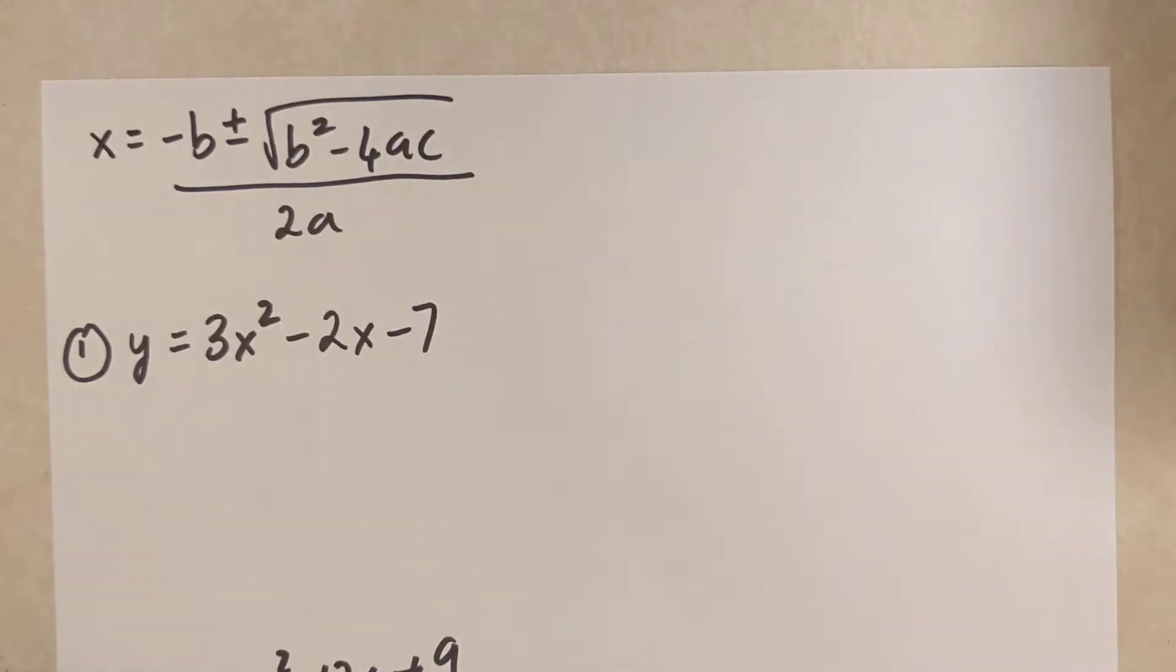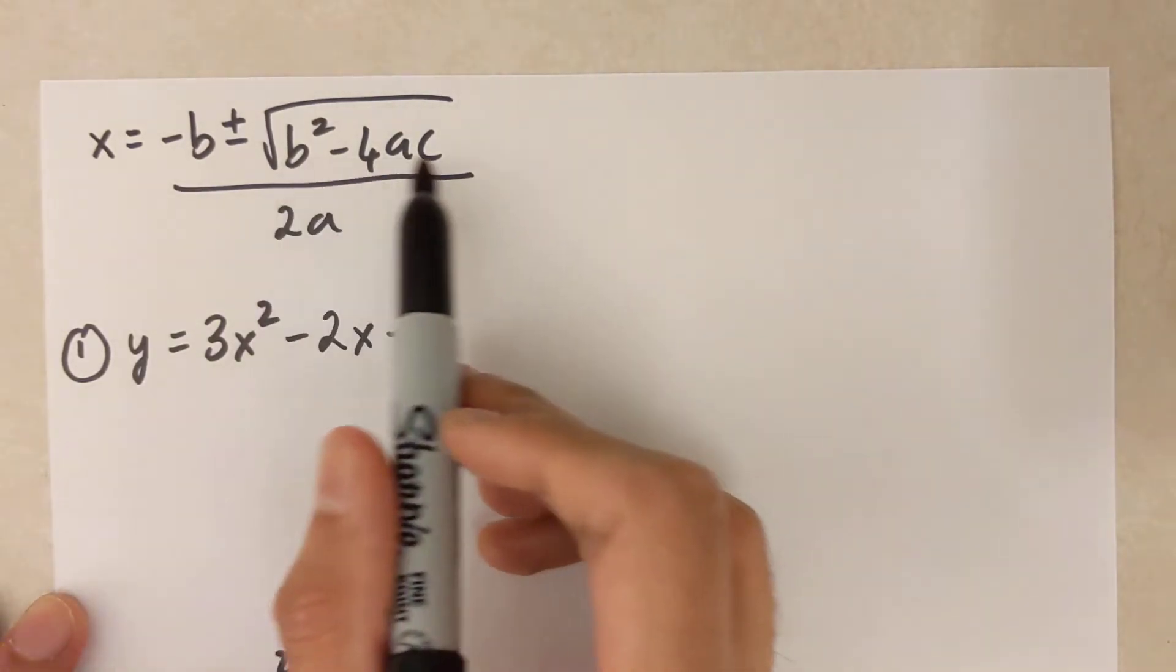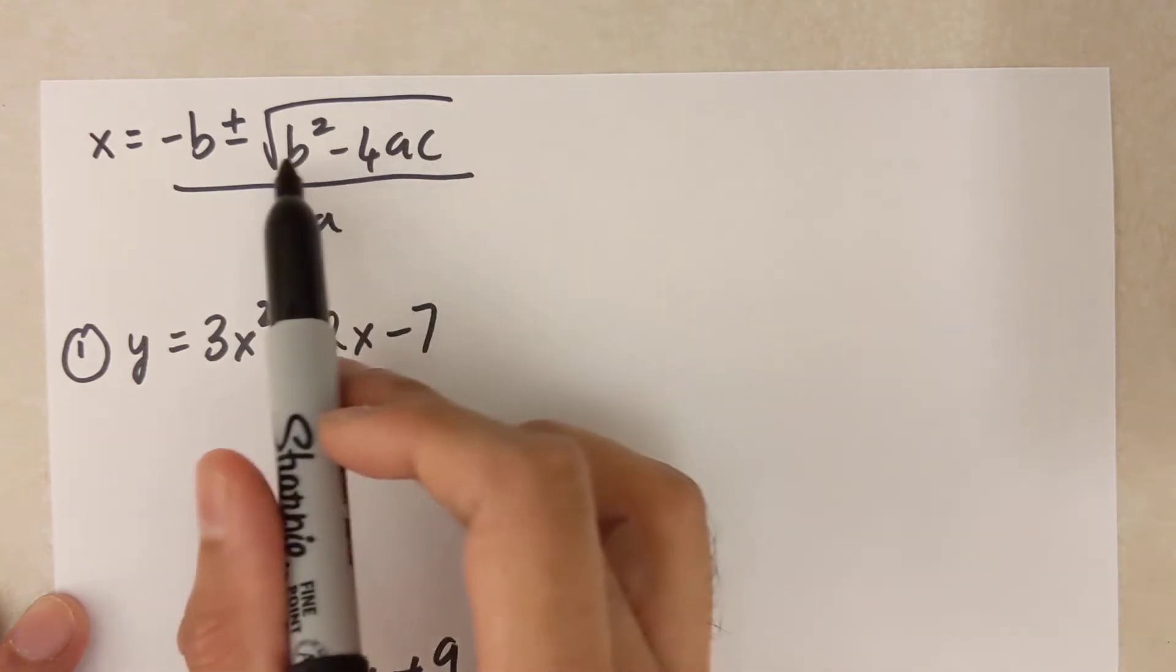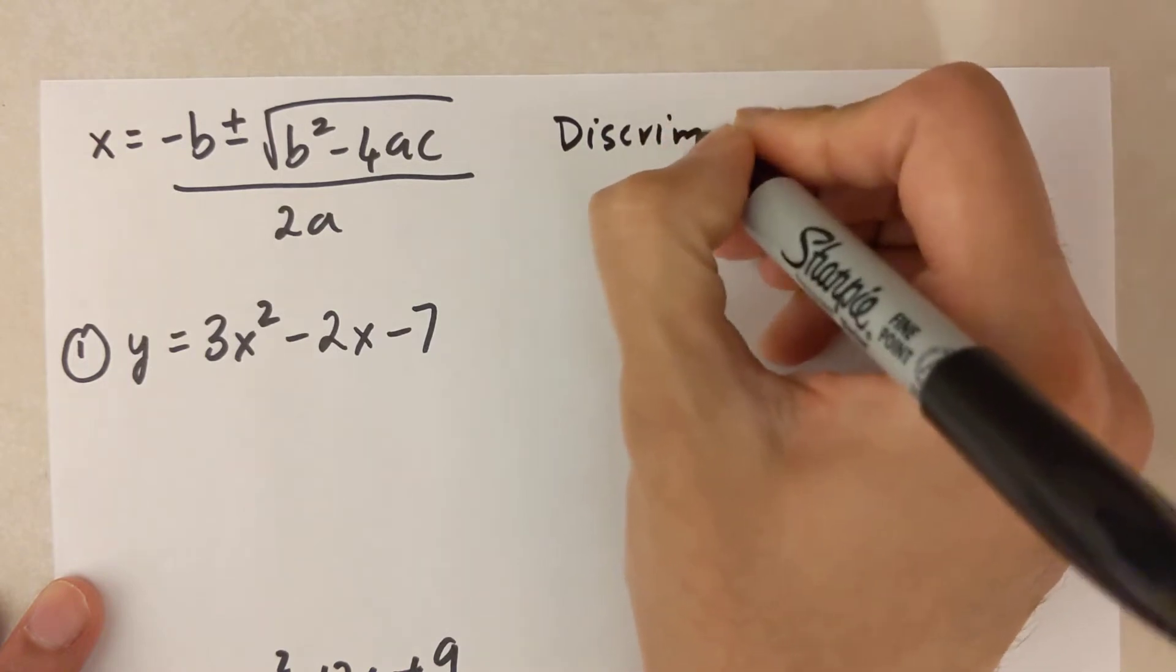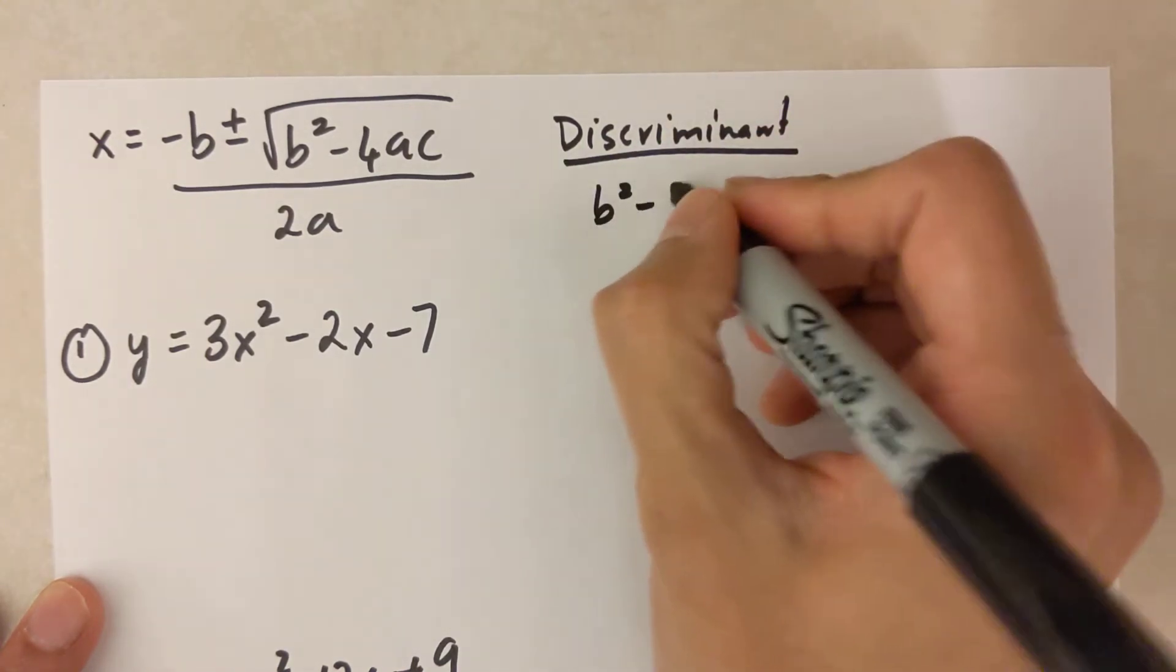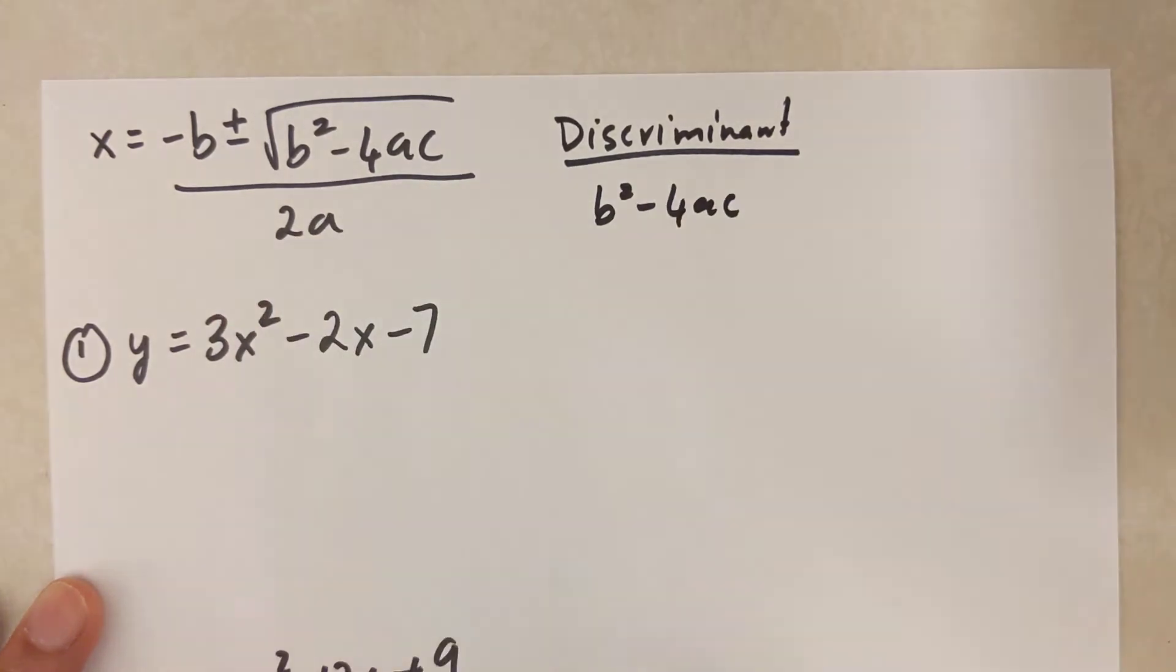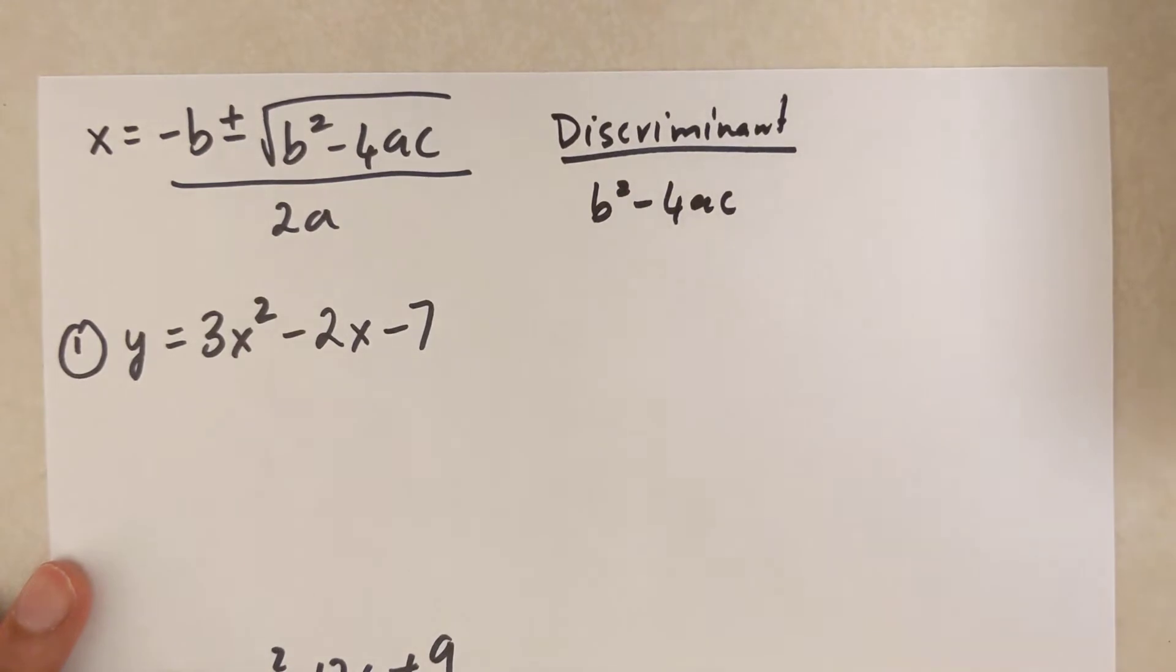Okay, so in this video we are going to use the discriminant to find the number of x-intercepts or roots. Now over there I have the whole quadratic equation, but what exactly is the discriminant? The discriminant is only this inside the bracket: b² minus 4ac. So I'll write that over here. It's just b² minus 4ac, it's what's inside the square root, and we're just going to use that to find the number of x-intercepts.